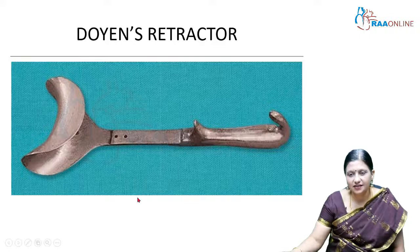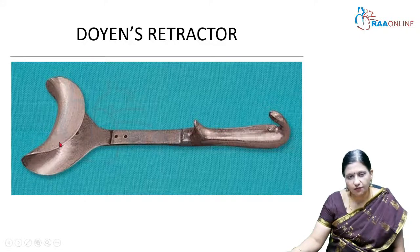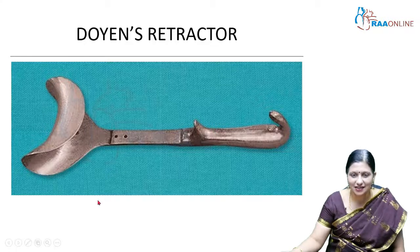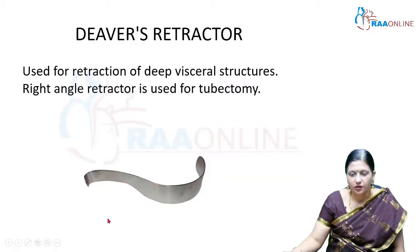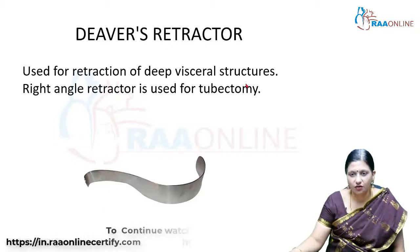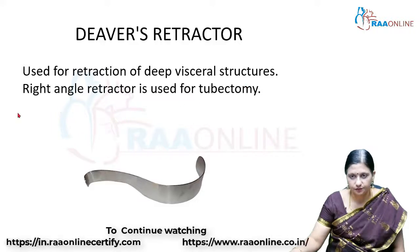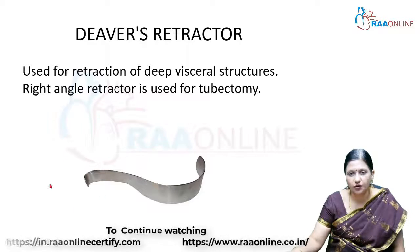The Doyen's retractor is shaped like a bladder and is used to retract the bladder during surgeries like caesarean section. The Deaver's retractor is used in total abdominal hysterectomy for retraction of the bowel loops and the vaginal wall; it may have a right-angle configuration and is also used during tubectomy.